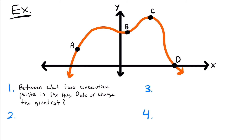We look at each pair of consecutive points. Between A and B we draw a dotted line and observe the slope. Between B and C, the line appears steeper. Between C and D, the slope is negative — going downward — so it's less than the positive slopes. Comparing A–B and B–C, the slope between B and C is steeper. So the average rate of change is greatest between B and C.